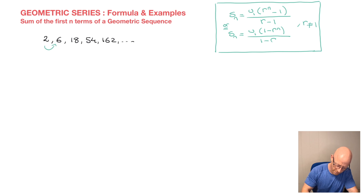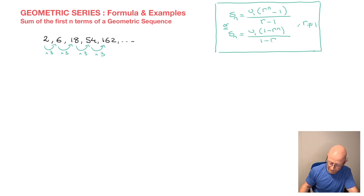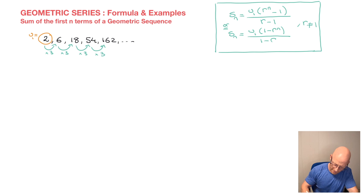Looking at this sequence, to get from one term to the next we're always multiplying by the same amount — that amount being 3. So this is a geometric sequence whose first term u sub 1 is equal to 2, and whose common ratio r is equal to 3.